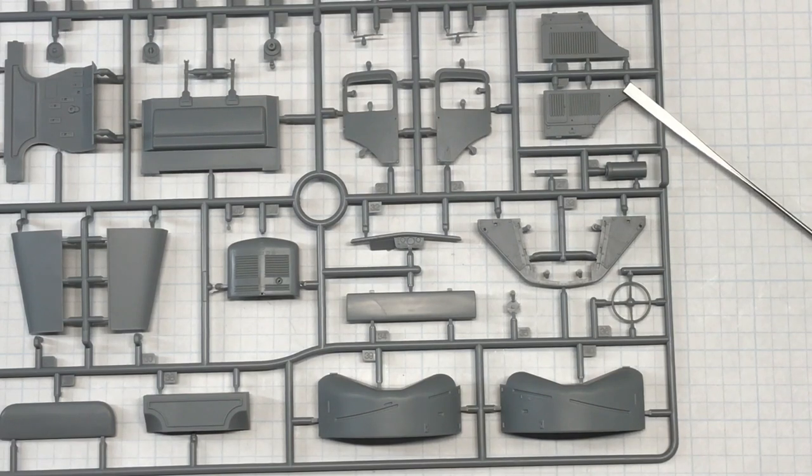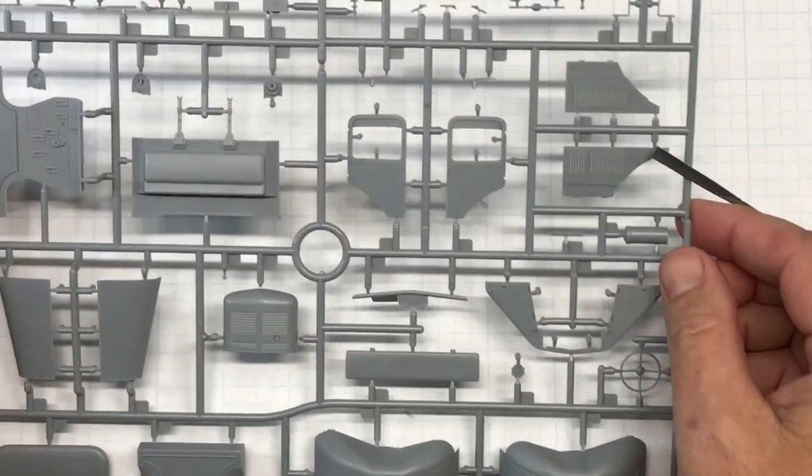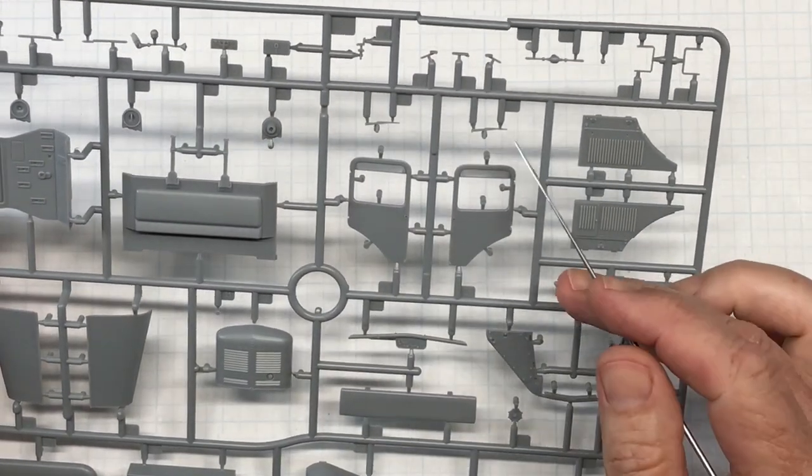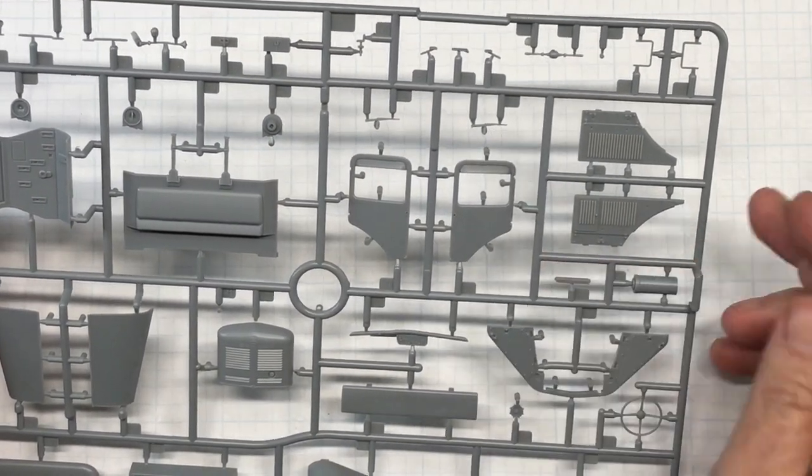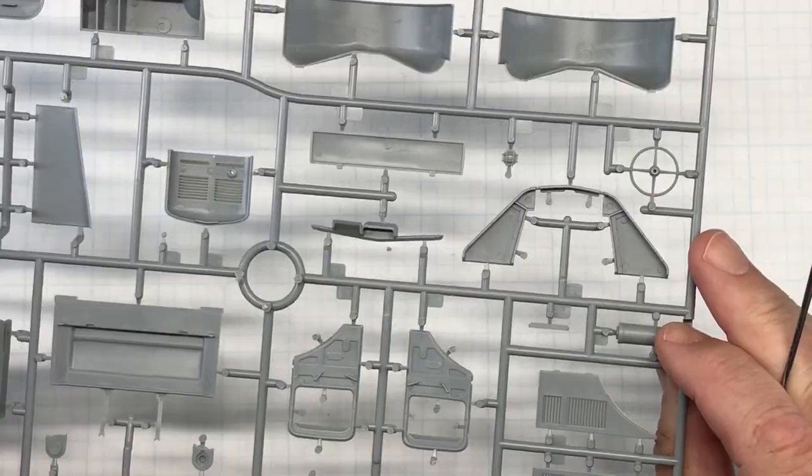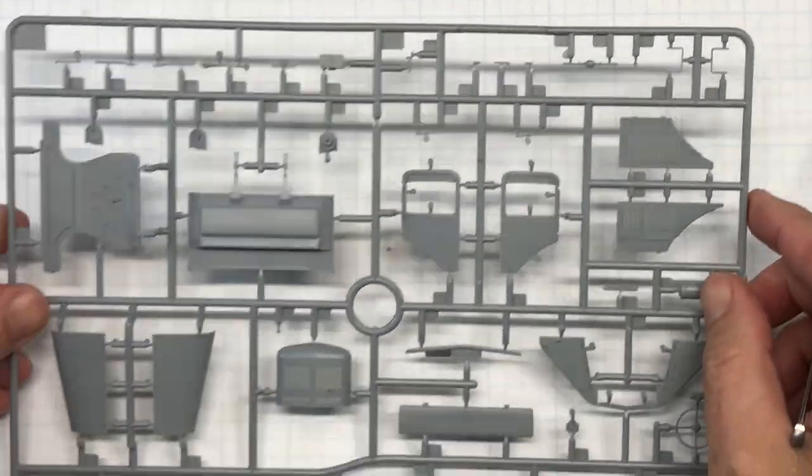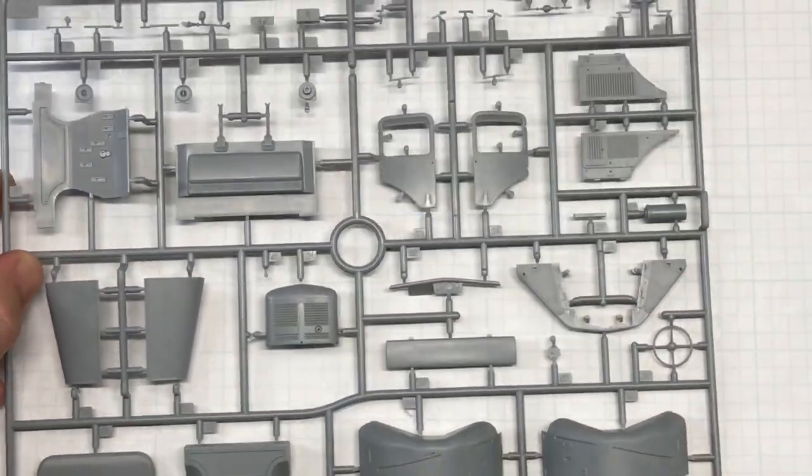So looks good. Windshield wiper blades. Boy those are really delicate there. Definitely wanna be careful chopping those out. But it all looks good. So that is sprue E.